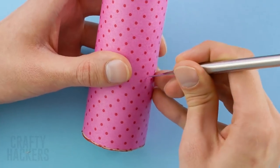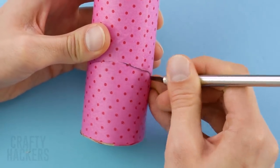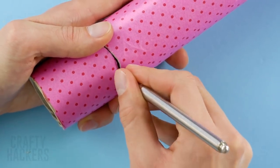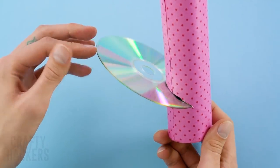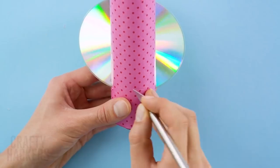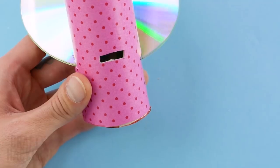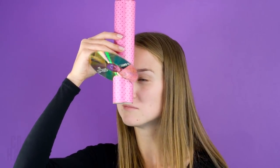Cut a slit at an upward angle along the side of the tube. Insert a CD or DVD into the slit. Then cut a small rectangular hole in the opposite side of the scope. Hold your tube up to the stars and take a peek inside. How many colors do you see? Now you've got your very own spectroscope for stargazing.